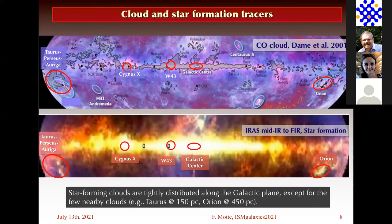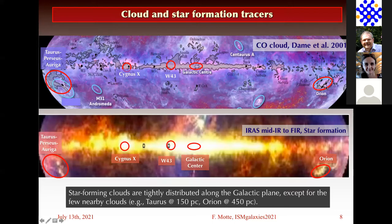What are the tracers of clouds? I'm presenting a CO map from Dame et al., showing that you really manage to get access to the galactic plane and separate clouds, especially those that are nearby. Here you have Taurus, Orion. And you have IRAS mid-infrared emission, which shows more the heating of OB stars on the cloud, so you retrieve Orion, Perseus — but here it's more difficult to really differentiate the regions.